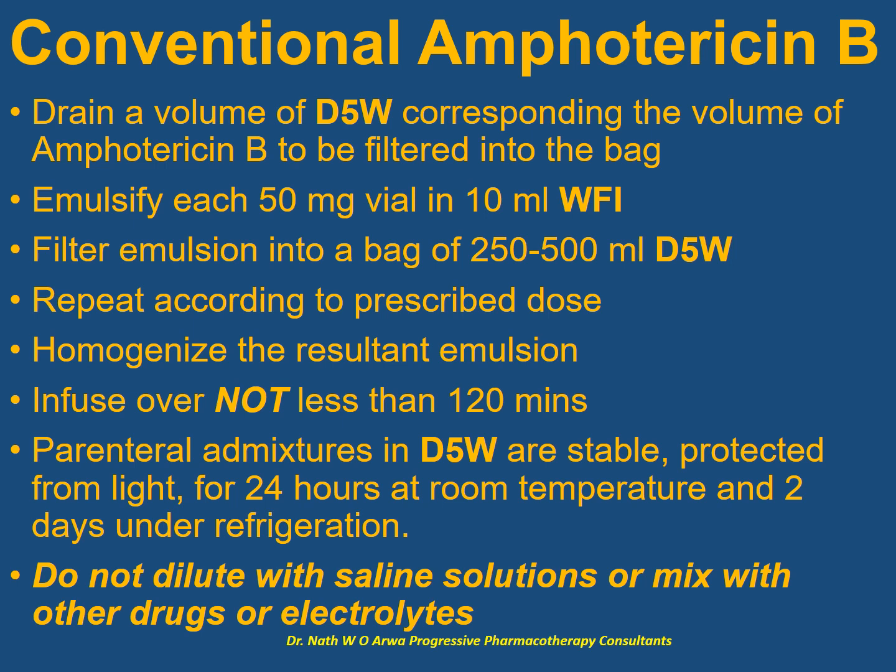The next product is conventional amphotericin B, and it needs proper planning. Create space in the bag to account for the solvent used during initial emulsification — drain a volume of dextrose 5% corresponding to the volume of the amphotericin B solution to be filtered in. The only compatible IV fluid is dextrose 5%. Emulsify every 50 mg vial in 10 ml of water for injection, and this emulsion must then be filtered into a bag containing 250 to 500 ml of dextrose 5%.